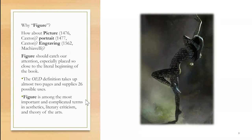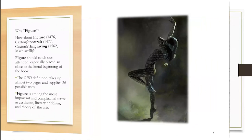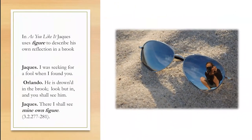Figure should catch our attention, especially placed so close to the literal beginning of the book. The OED definition takes up almost two pages and supplies 26 possible uses. Figure is among the most important and complicated terms in aesthetics, literary criticism, and the theory of the arts. It's also a very interesting word in Shakespeare. In As You Like It, Jaques uses figure to describe his own reflection in a brook: 'I was seeking a fool when I found you. He is drowned in the brook. Look but in, and you shall see him. There I shall see mine own figure.'